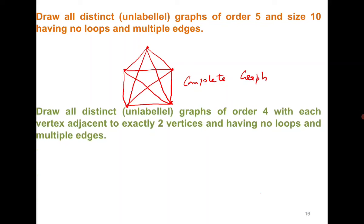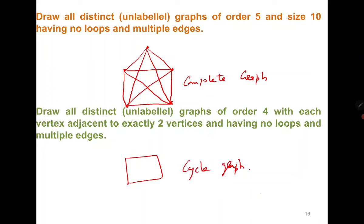Draw all distinct graphs of order 4 with each vertex adjacent to exactly two vertices, having no loops and multiple edges. There is only one such graph, which is a cycle graph of length 4. That's all from today's class — please keep attending the lectures, thank you very much.